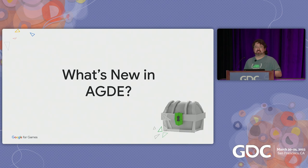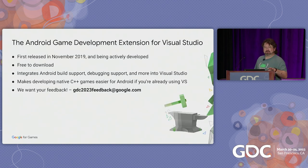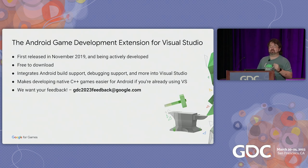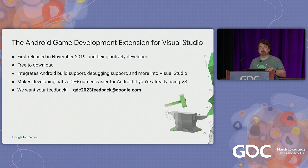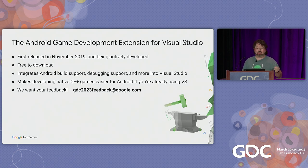So what's new this year in AGDE? If you're looking at this slide, you might actually be thinking: what's AGDE? Let me get you up to speed. AGDE is the Android Game Development Extension for Visual Studio. It's a free extension for Visual Studio, first released in November 2019, and it's under active development. It integrates Android build support, debugging support, and more into Visual Studio. So if you're already developing native C++ games in Visual Studio, it will make it easier for you to develop them for Android.